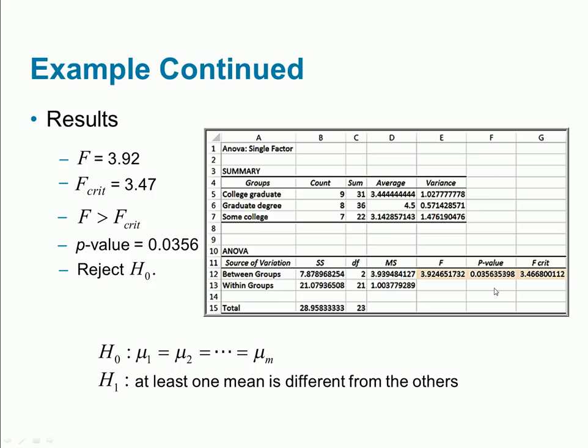Between groups sum of squares: if I look at the average of college graduates, graduate degrees, and some college and square those differences compared to the overall average, I get 7.87. Within group difference is basically if I look at the sum of squares—that is each observation minus the average of that group—I end up with 21. The total is just the sum of them.